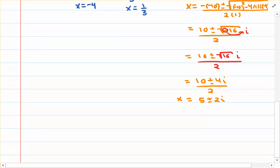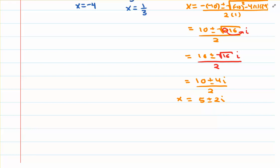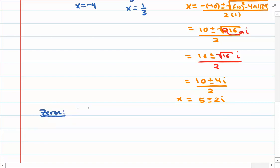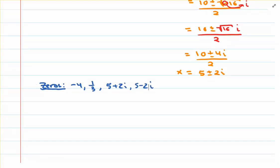Notice that there are two values of x: x is 5 plus 2i and also x is 5 minus 2i. So there are two non-real zeros here, as our graph had indicated. Collectively we have four zeros — the fundamental theorem of algebra says there are no more, since four zeros equals the degree of the polynomial. The zeros are: negative 4 (real), 1 third (real), 5 plus 2i, and 5 minus 2i (both non-real).